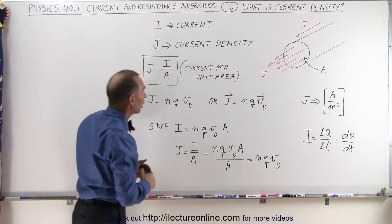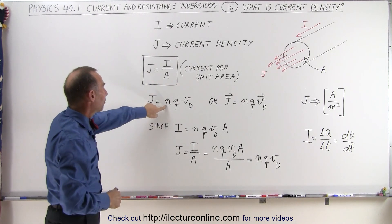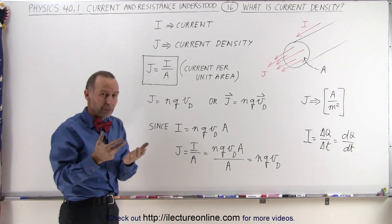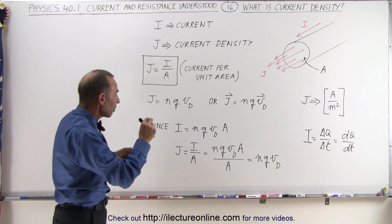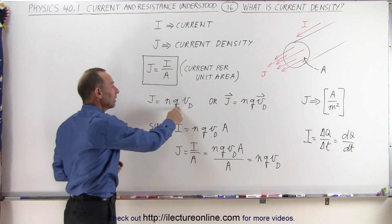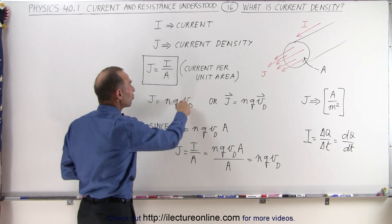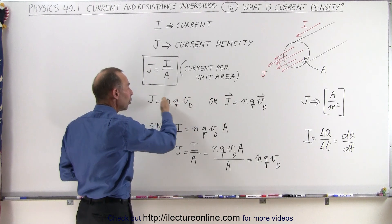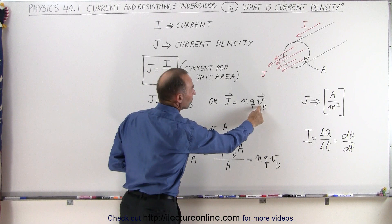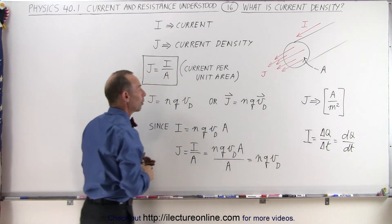Current density can also be defined as the number of charge carriers per unit volume. Basically, for a typical metal, this would be one electron freed for every atom, so that would be the density of the atoms in the conductor times the value of the charge, typically just a single electron, times the drift velocity of the current going through the conductor. You can also write that as a vector quantity if you assume the velocity to be a vector, and so J, the current density, could be a vector quantity as well.